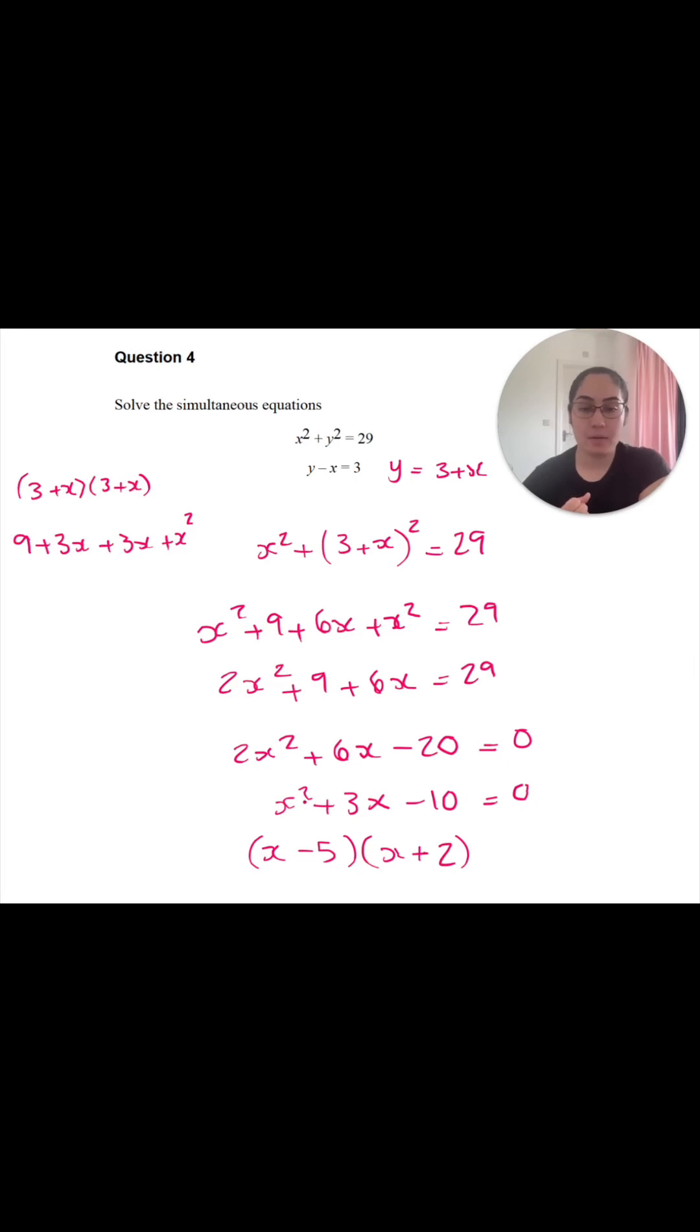No, if I do that, I do get minus 10, but I'm going to get negative 3, not positive 3. So I'm going to change my signs around. That's going to be plus 5 minus 2. So they multiply to give me minus 10 and 5 minus 2 gives me 3. Works out perfectly.